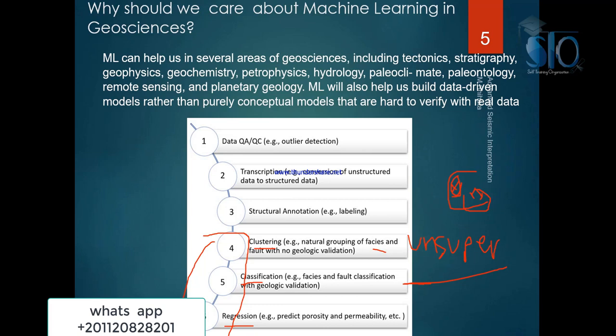Classification depends on supervised learning — that means we help the software. For example, if we have a salt dome, we can pick some points inside the salt dome in the software. These points extract seismic attributes such as attribute A and attribute B as a guide for predicting the salt dome. If the envelope attribute is very high and the amplitude is also very high, we can predict any salt dome in the area because we have criteria to search for. This is classification — unsupervised is cluster, supervised is classification.